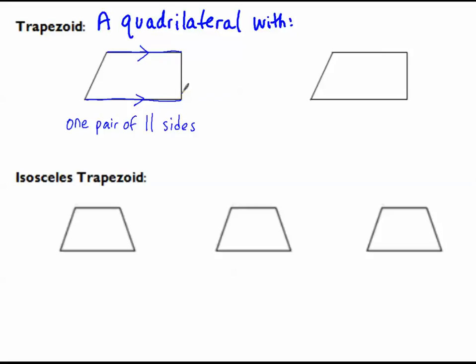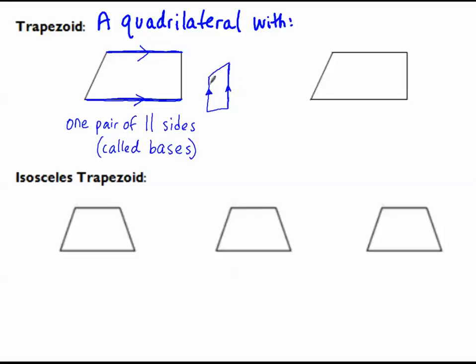These parallel sides are called the bases. Base there, base there. The bases are the sides that are the parallel ones — they don't necessarily have to be on top and bottom. Here's another trapezoid where these are the parallel sides: one pair and only one pair. The non-parallel sides are called the legs.